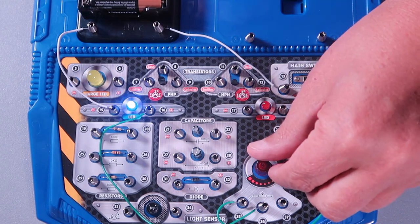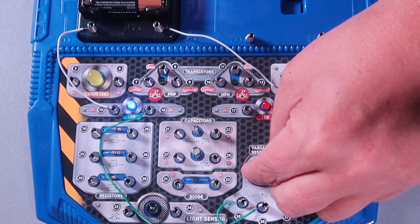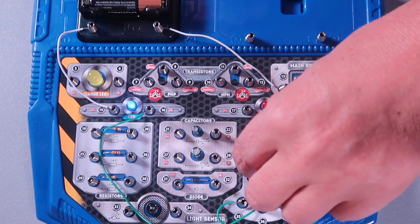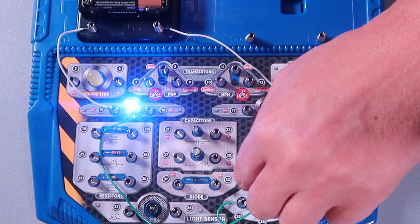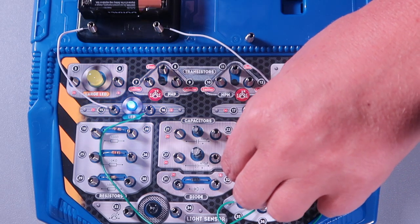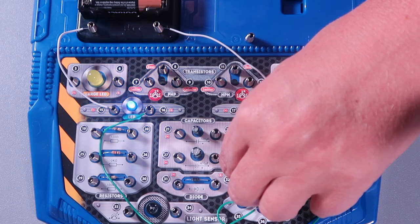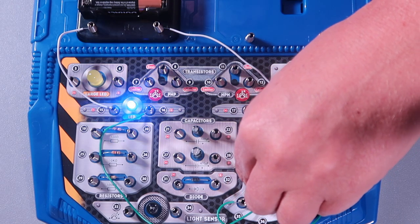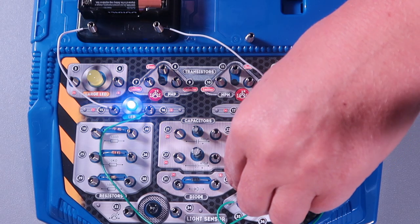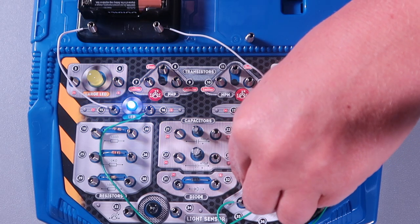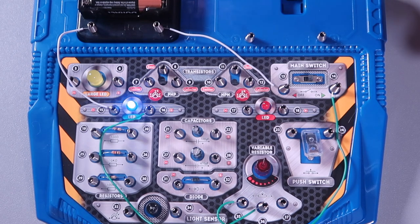Now watch the blue LED as I adjust the variable resistor. It gets dimmer or it gets brighter. And that is a great demonstration of how resistance changes the flow of electricity. Great little experiment.